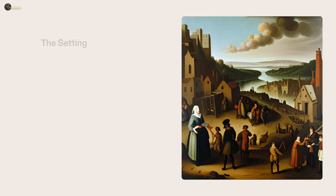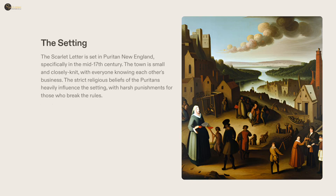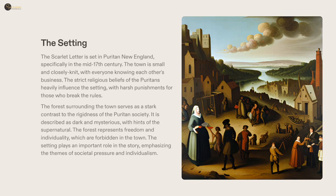Set in Puritan New England in the mid-17th century, The Scarlet Letter tells the story of a small, close-knit town heavily influenced by the strict religious beliefs of the Puritans. The town is rigid and oppressive, while the forest surrounding it is mysterious and vibrant — a symbol of freedom. The dichotomy between the expectations of society and the desire for freedom highlights the importance of the setting and plays an integral role in the story.